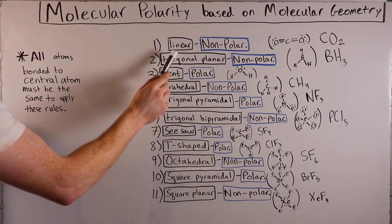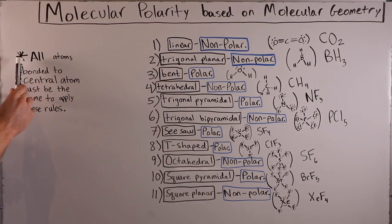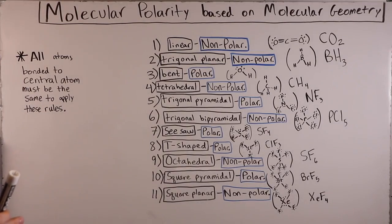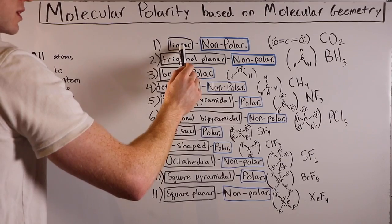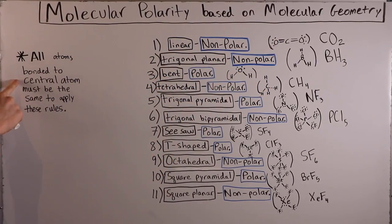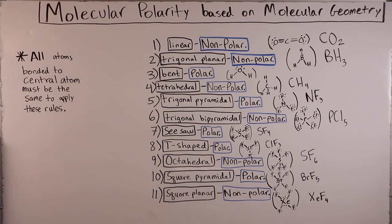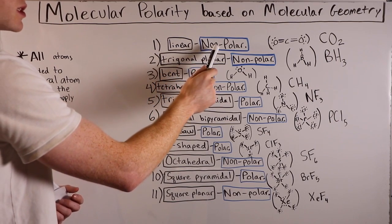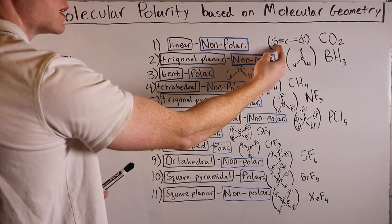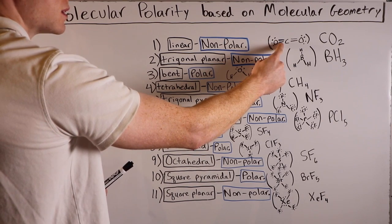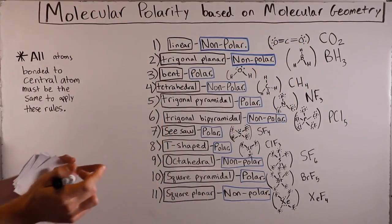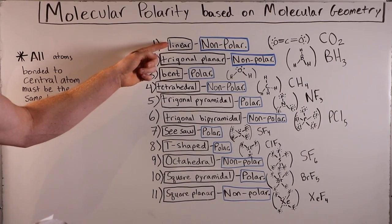For the linear molecular geometry, even though oxygen is more electronegative than carbon and each C=O bond is a polar covalent bond, there is an identical polar covalent bond pulling in the opposite direction. It's like a tug of war where both dipole moments cancel each other out, making all linear molecular geometry molecules nonpolar. An example of this is CO₂.